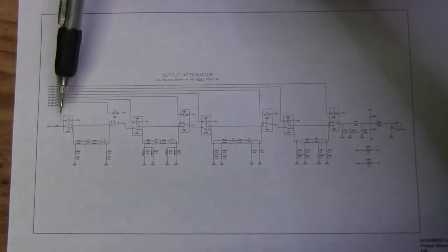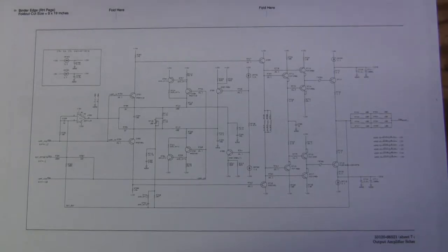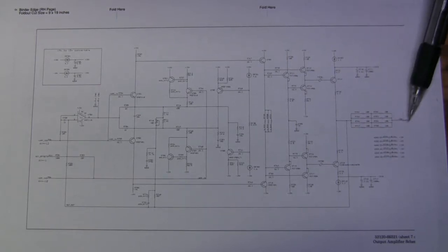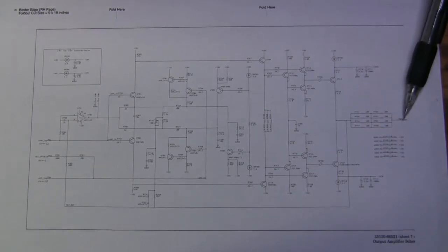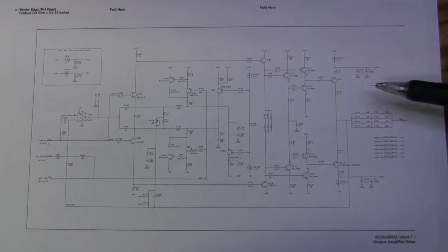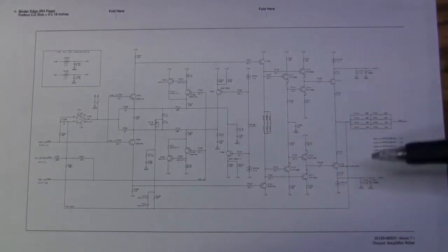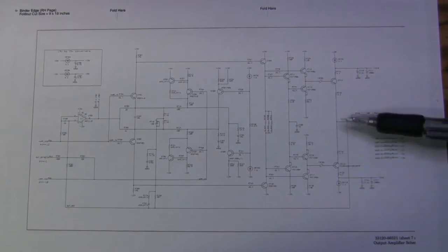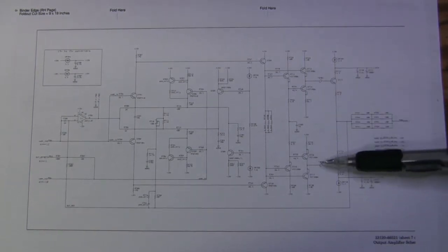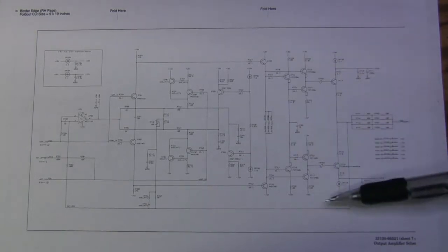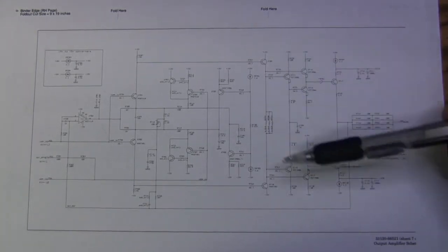I believe the problem must be in the previous stage somewhere. Here it is—the previous stage goes to that attenuator from this point, and here we see the plus and minus 18 volt powered amplifier. This is the final output stage and the problem must be here somewhere.